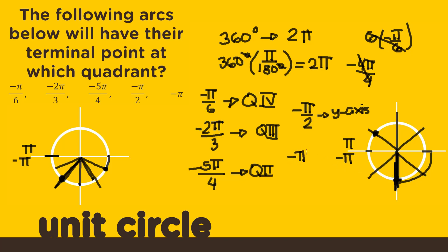Finally, for negative pi — we've already seen this. Similar to negative pi halves, it's not found on any quadrant, but specifically on the x-axis. The point here will also have integral values. So again, the purpose of identifying terminal points is to properly determine the coordinates — because it's not enough to memorize pi over 6, pi over 3, pi over 4 and their multiples. We also need to understand the location of each terminal point to implement the correct signs. As a reminder, we're moving clockwise because all our arcs here are negative, whereas in the previous video we moved counterclockwise because they were all positive.